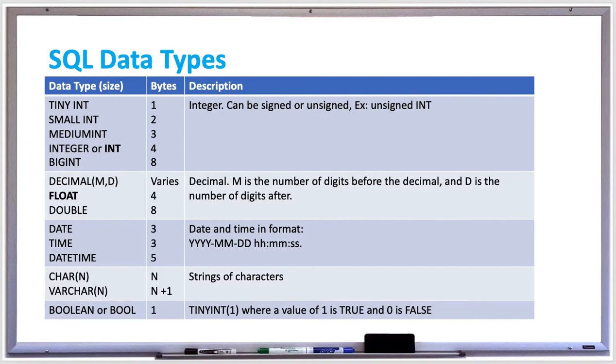Here are some other data types shown in this table. All the integer types are in the first row: TINYINT, SMALLINT, MEDIUMINT, INTEGER or INT, and BIGINT. Depending on the amount of bytes or size that you want to use, that's how you decide which one. If you're not really limited on space or memory, then I would just go with regular INTEGER or INT.